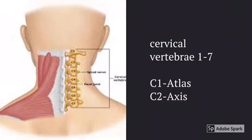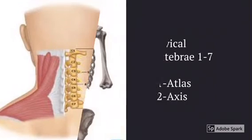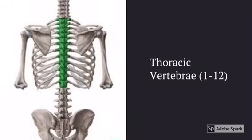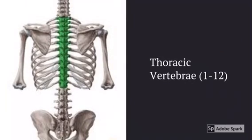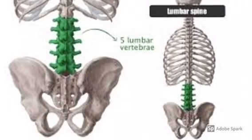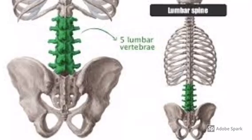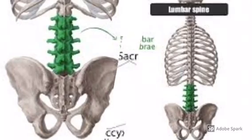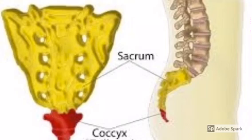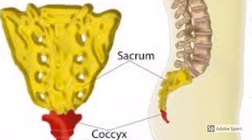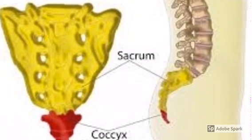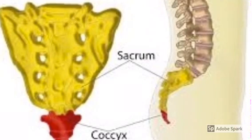These are the cervical vertebrae — there are seven of them. The first two have special names: the atlas and the axis. These are your thoracic vertebrae — there are 12 of them. These are your lumbar vertebrae — there are five of them. I always remember the vertebrae because I think: breakfast at seven, lunch at twelve, dinner at five.